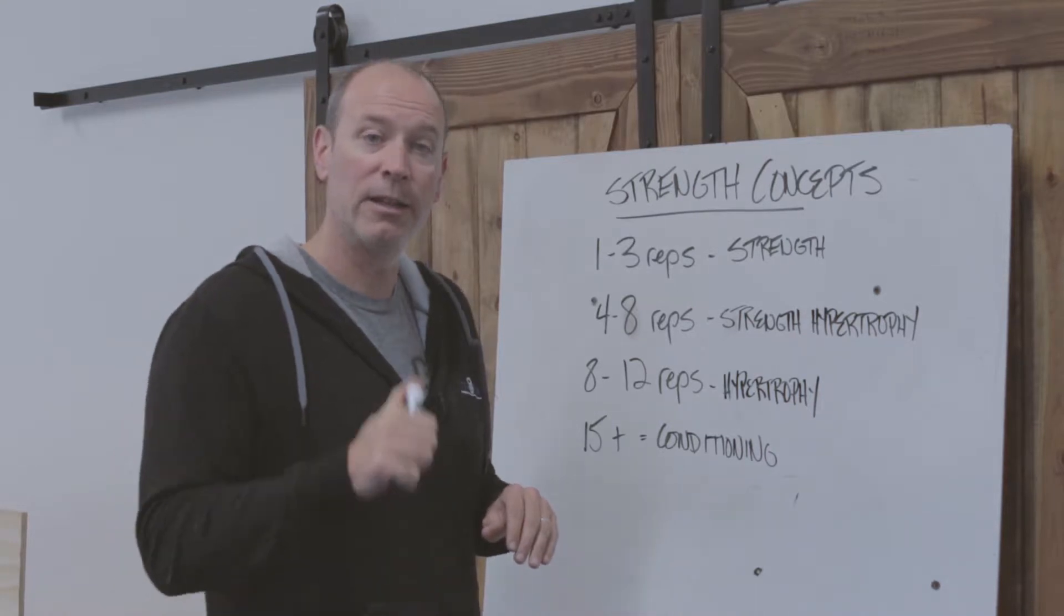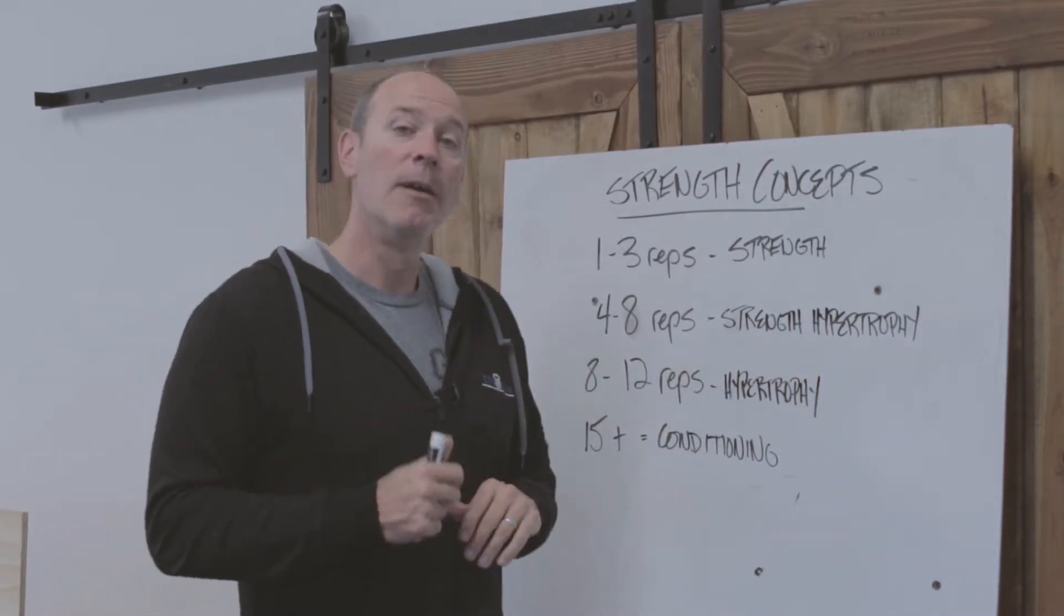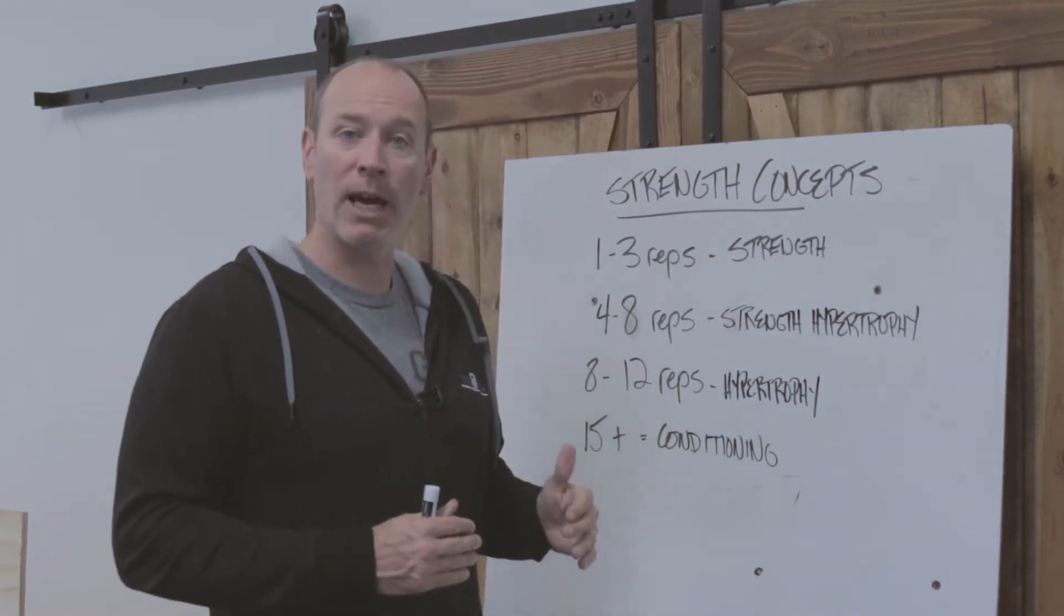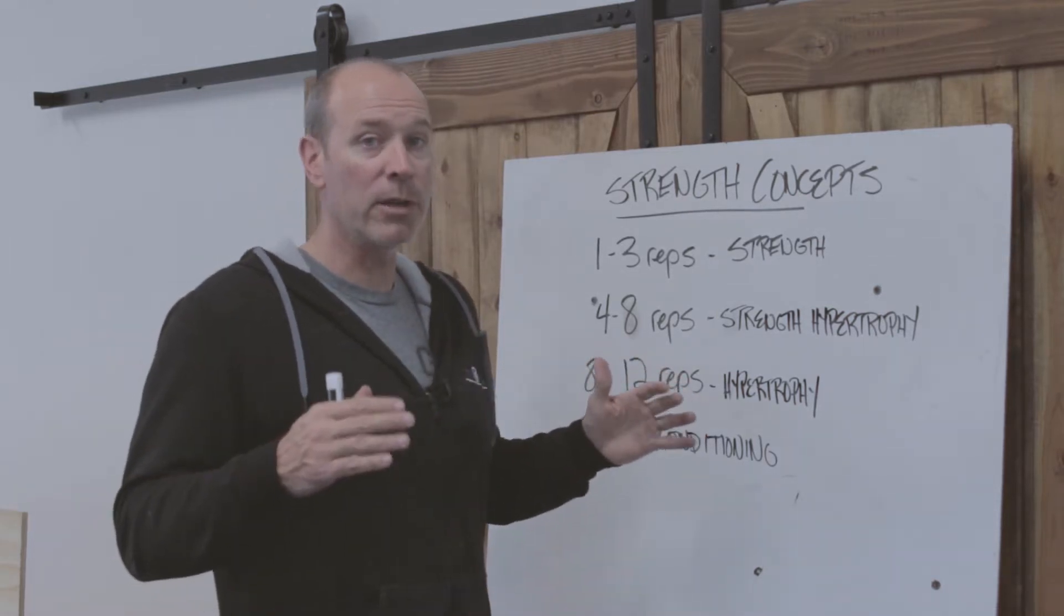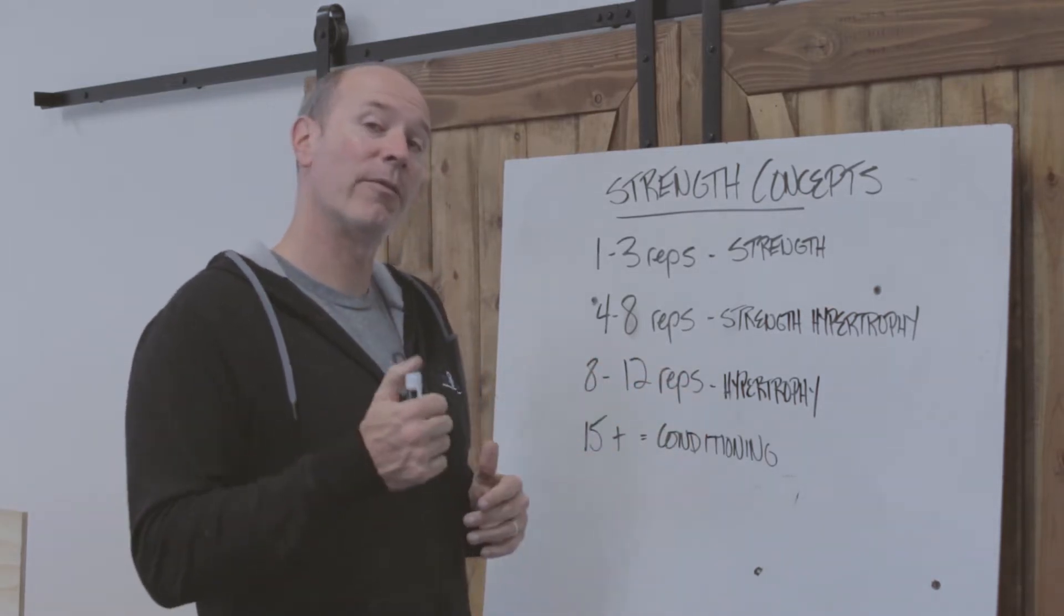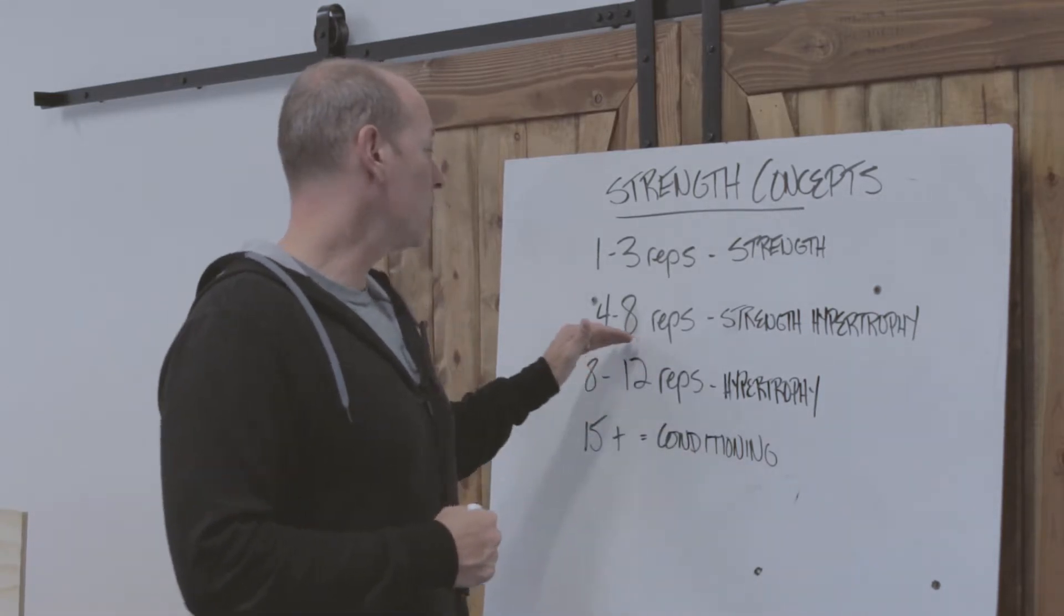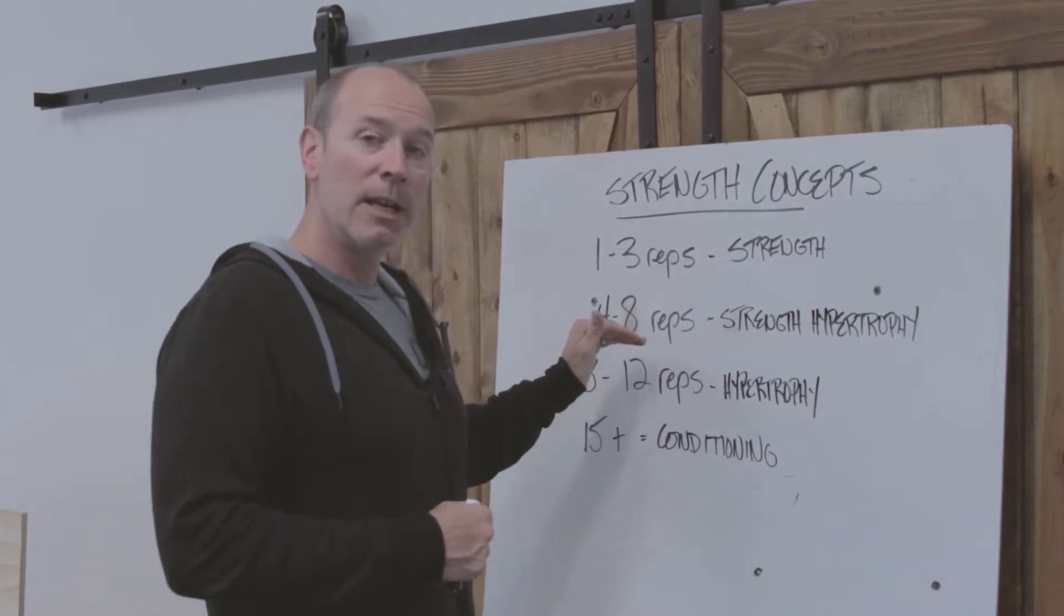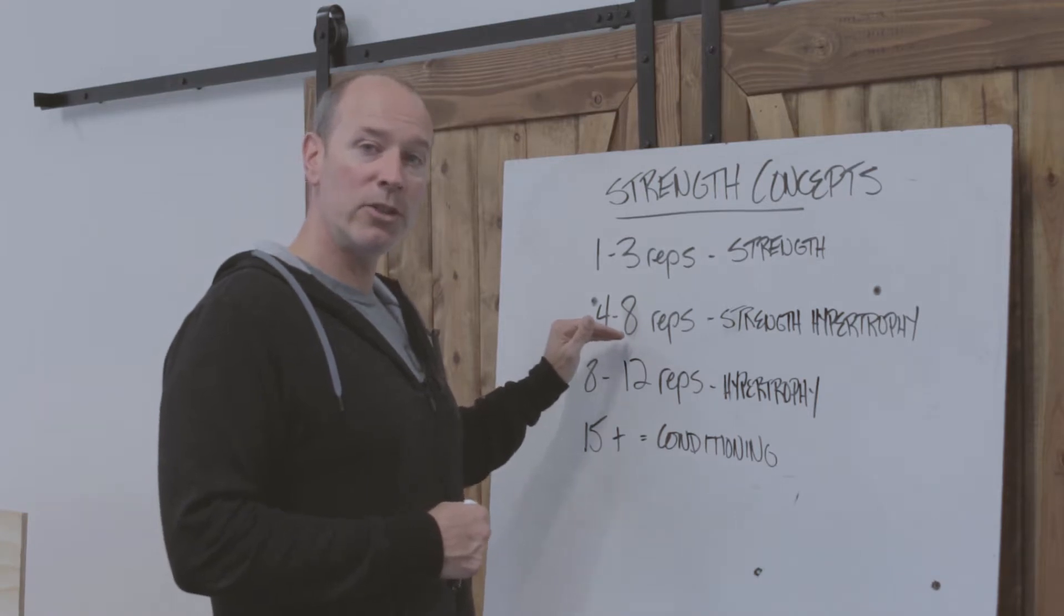The next one would be strength hypertrophy, four to eight reps—a combination of strength and building lean body mass. Once again, not getting big and bulky, but you have to have some muscle mass to have a faster metabolism and to literally be stronger. In that range, if you're able to sneak out a couple more reps, it's more of a mental battle. We're kind of okay with that, we allow it to creep up a little bit more where you're trying to push yourself.